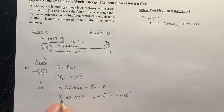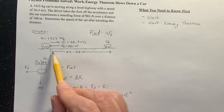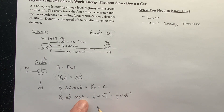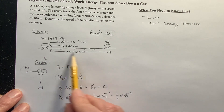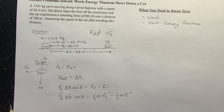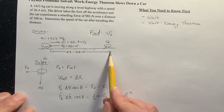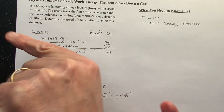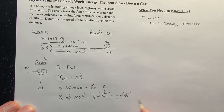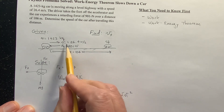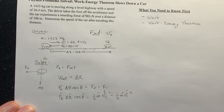Now let's figure out what I know. Do I know the retarding force? Yes, 901 newtons. Do I know delta x? Yes, 106 meters. Do I know the angle between the force and the displacement vector? Yes, because the displacement vector is to the right but the force is to the left. What angle is between to the right and to the left? To the right is this way and you have to go 180 degrees to go that way. So theta is going to be 180 degrees. I know the mass — the mass is given. Do I know the final velocity? No, but that's what I'm trying to find. And do I know the initial velocity? Yes, 26.4. So I know everything except what I'm trying to find.